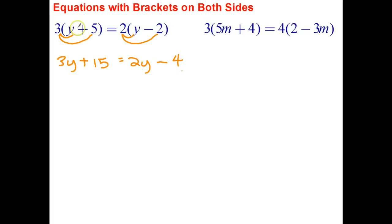So step 1, if I've got brackets on both sides of the equation, is expand the brackets. Now we've seen equations like this before. I've got a term involving y on the left, I've got a term involving y on the right. So the next step I have to do is to get the unknown on only one side of the equation.